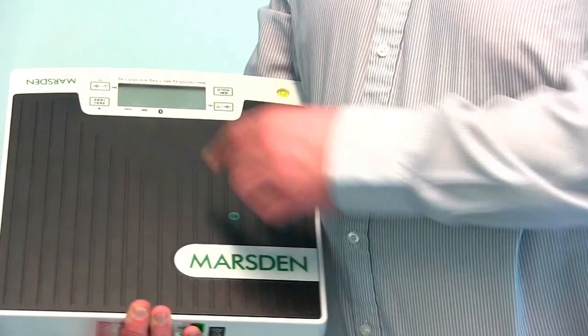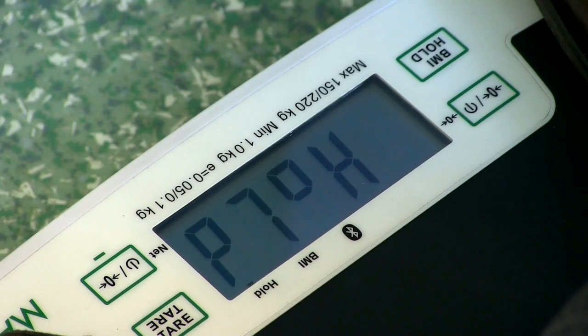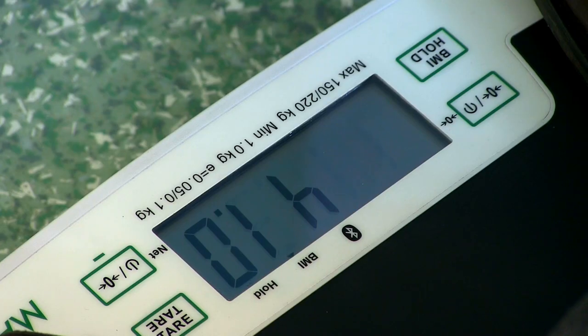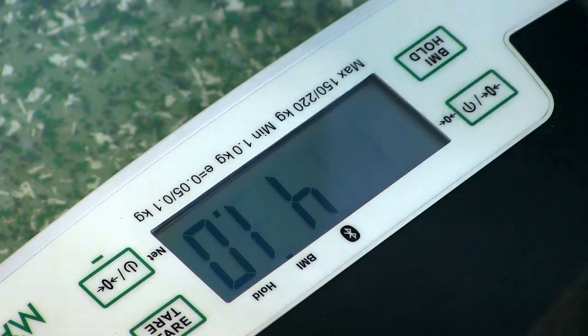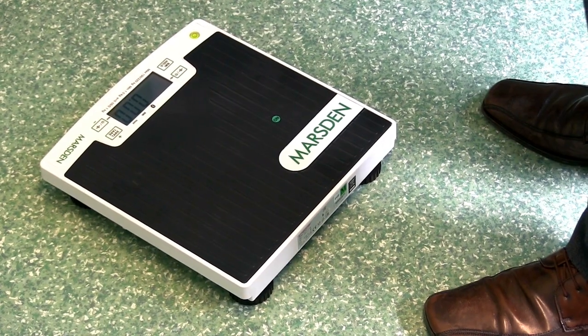Weight reading on the scale can be reversed. It has a tap on feature, hold weight feature, BMI function, and it also comes with a Bluetooth option for transferring the weight data to a central database via a PC, tablet or smartphone.